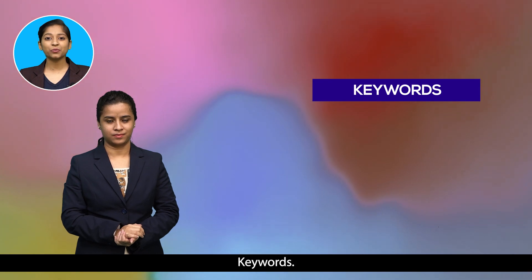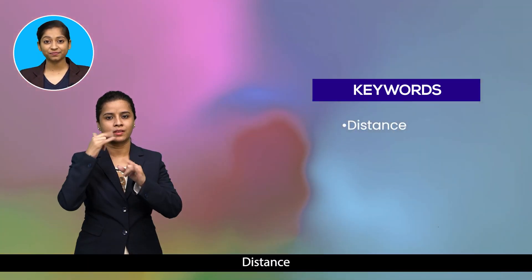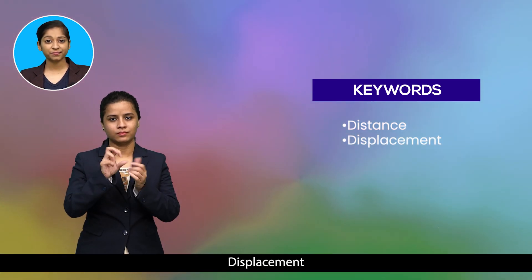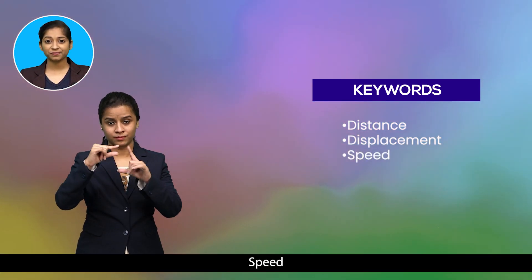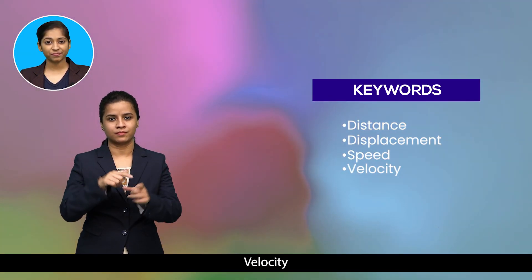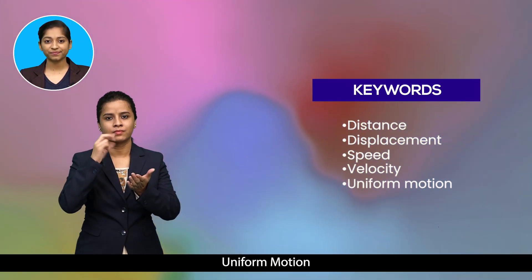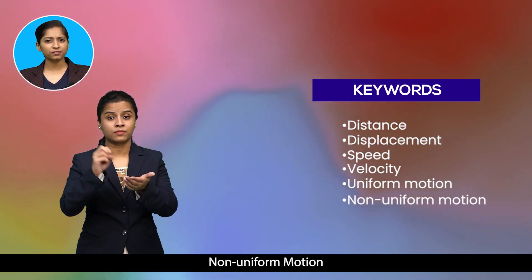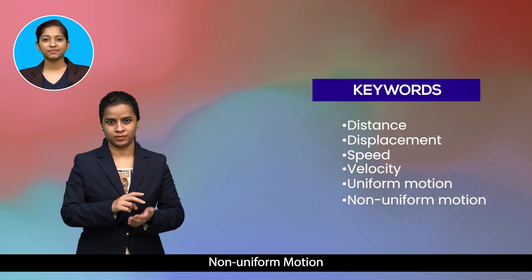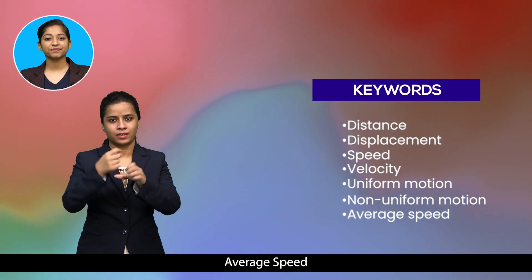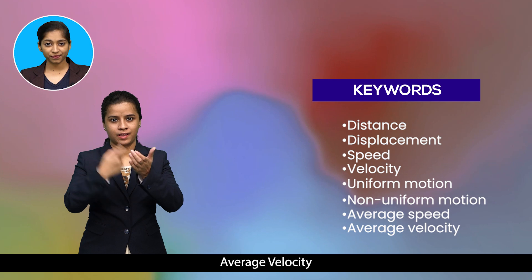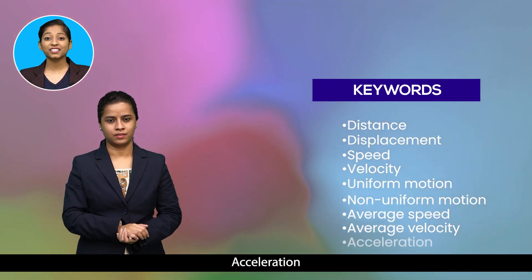Key words for this chapter: distance, displacement, speed, velocity, uniform motion, non-uniform motion, average speed, average velocity, and acceleration.